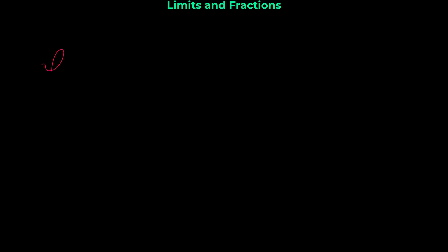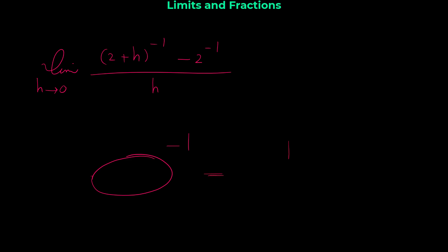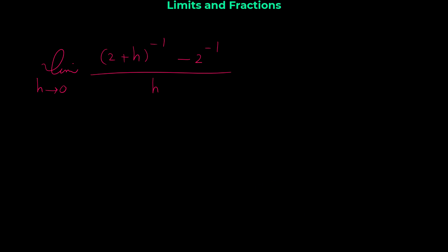Let me show you another example. We want to find the limit as h approaches 0 of (2 + h) to the negative 1 minus 2 to the negative 1, all over h. We do have fractions here — they're just not written in fraction form. A negative exponent means 1 over that expression, so (2 + h)⁻¹ is 1 over (2 + h), and 2⁻¹ is 1/2. So we want the limit of 1 over (2 + h) minus 1/2, all over h, as h approaches 0.